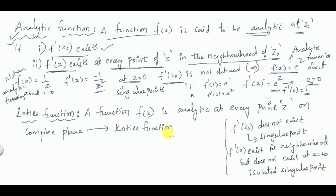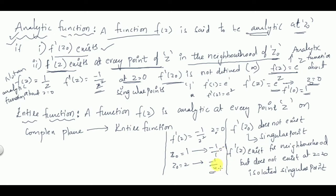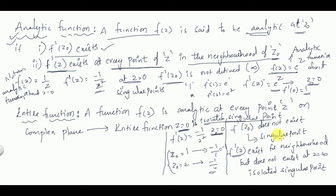In the above example with f'(z) = −1/z², taking z₀ = 0: f'(z) is defined at z = 1 (value is −1), defined at z = 2 (value is −1/4), but is not defined only at z = 0. Therefore z = 0 is an isolated singular point. This is the concept of singular point and isolated singular point.